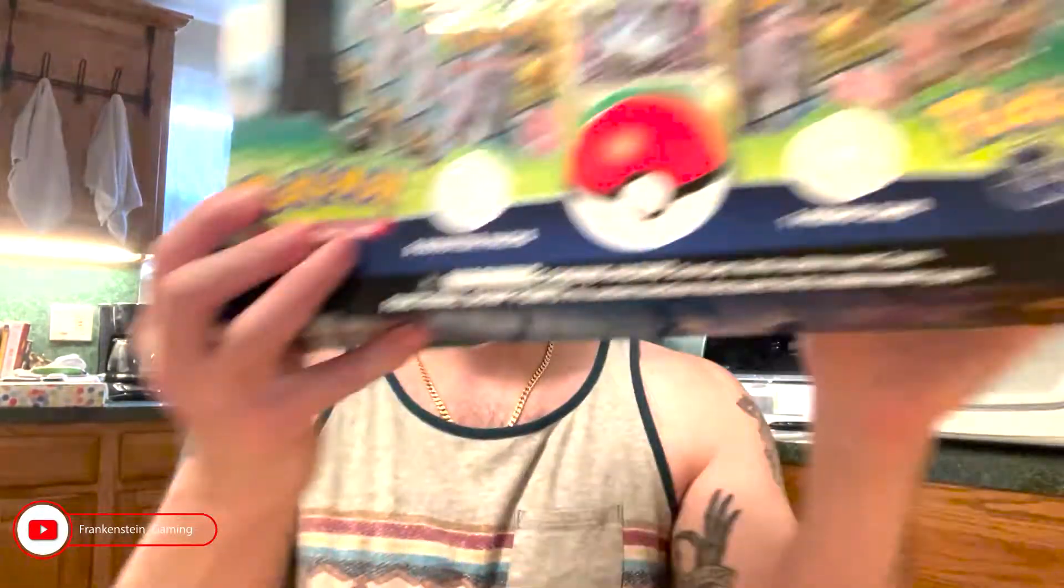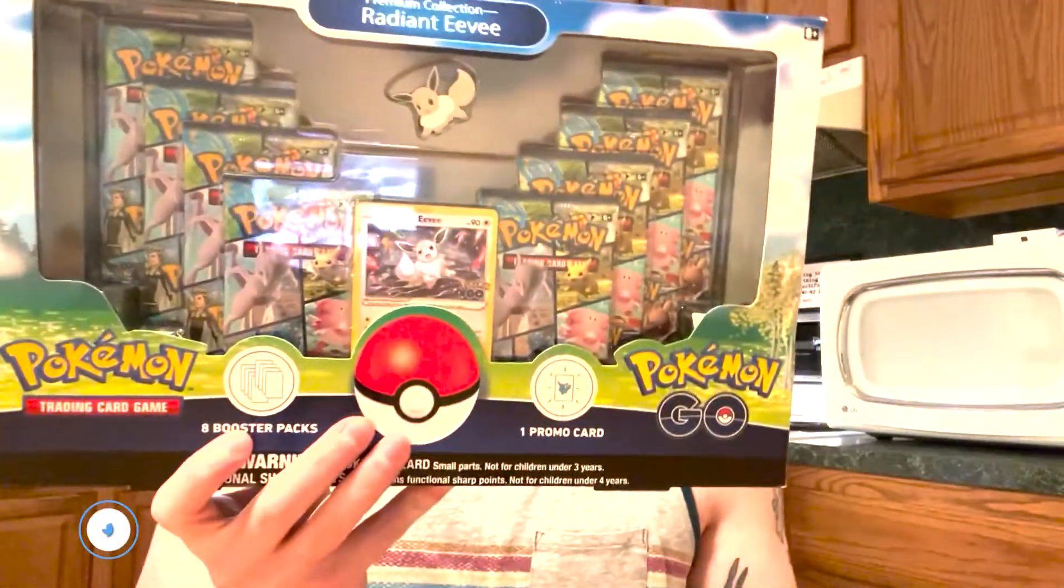How's it going everyone, Frankenstein Gaming. It's been a bit, it's been a while, it's full summertime right now, as you can see I'm in a tank top, and I figured let's do an unboxing. The Pokemon trading card game just recently released the Pokemon Go pack. We're doing the Radiant Eevee unboxing, so let's dive into it, see what pulls we get, and take a look.